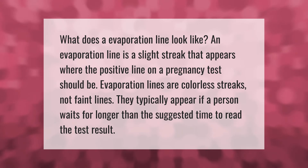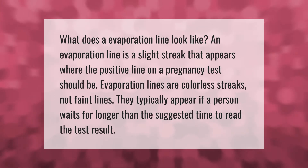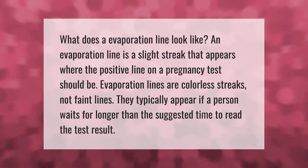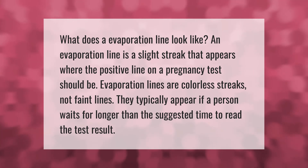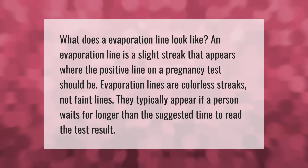What does an evaporation line look like? An evaporation line is a slight streak that appears where the positive line on a pregnancy test should be. Evaporation lines are colorless streaks, not faint lines. They typically appear if a person waits longer than the suggested time to read the test result.